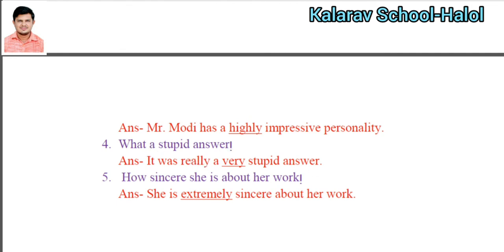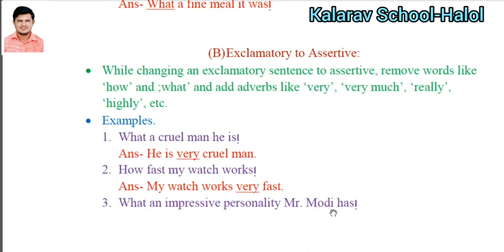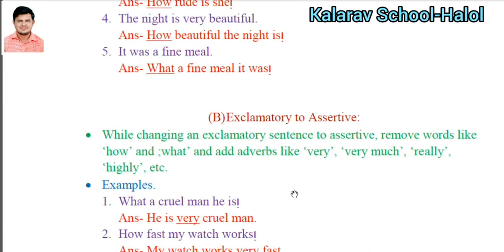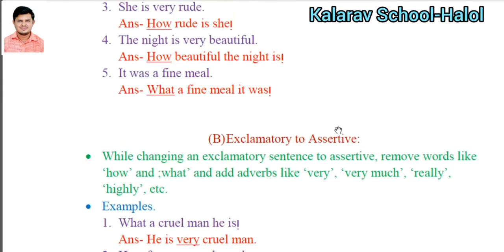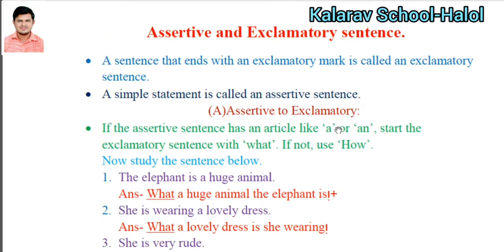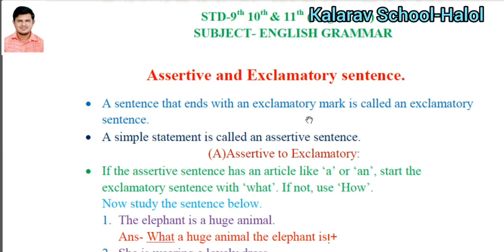'What a stupid answer it was!' — 'It was a very stupid answer.' 'How sincere she is about her work!' — 'She is extremely sincere about her work.' These are the rules to turn an exclamatory sentence to assertive, and to turn an assertive sentence to exclamatory.